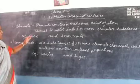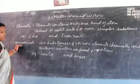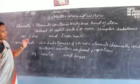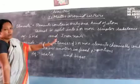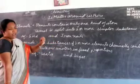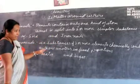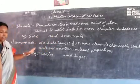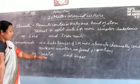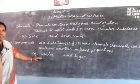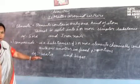Whereas in compounds, it is a mixture of two or more elements where they get chemically combined in a fixed proportion. For example, water and sugar. Water is a compound because it is made up of hydrogen and oxygen molecules.